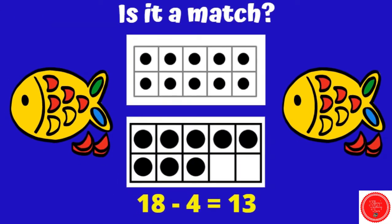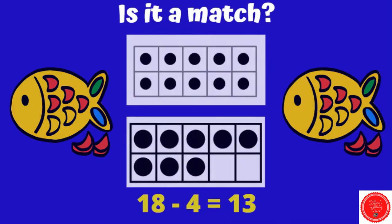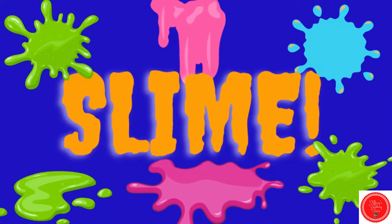How about this one? 18 minus 4 equals 13. So we have 18 — I need to take away 4. 18 minus 4 — let's see how many we have left. This is 10, 11, 12, 13, 14. That is not a match. 18 minus 4 equals 14, not 13. Slime.